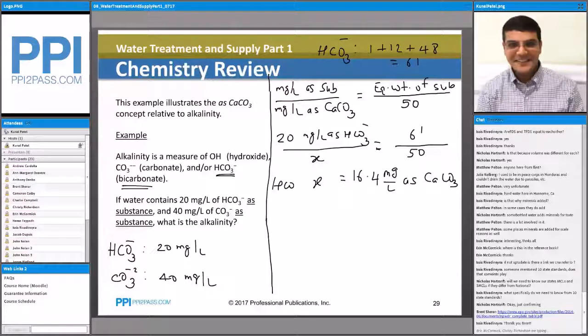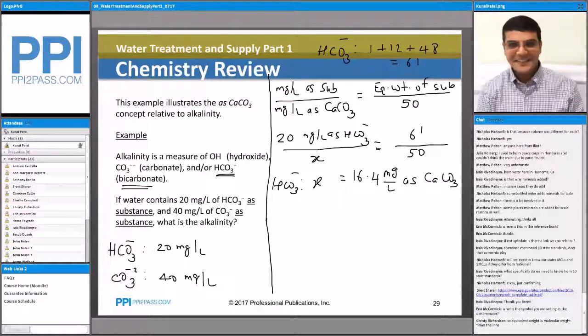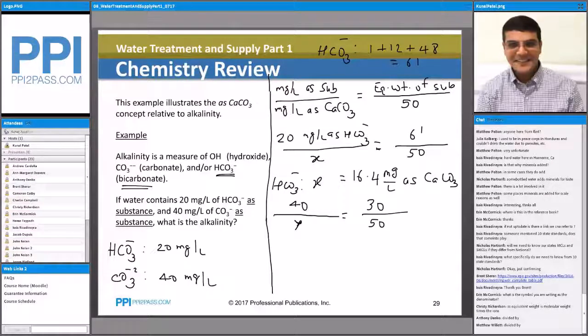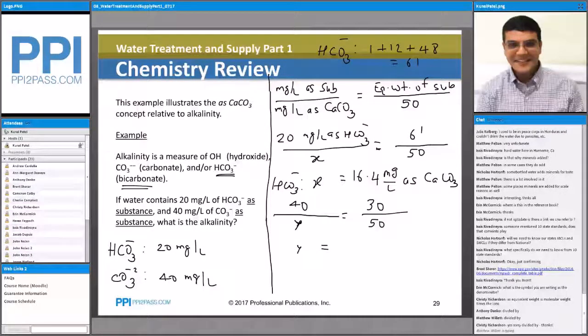This is for HCO3 minus. And same thing I would do for the carbonate ion. For carbonate, I have the milligrams per liter as 40 divided by let's say Y. The equivalent weight of carbonate is going to be, in this case, 30 over 50, because molecular weight of carbonate is 60, but then the charge is 2, so I divide by 2. And then I get the Y value as 50 times 40 divided by 30, and that gives me 66.7.